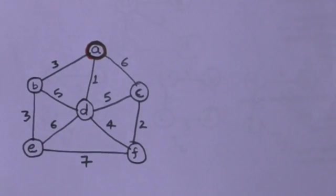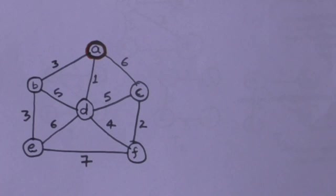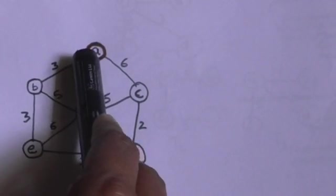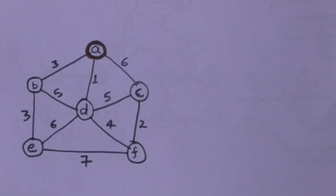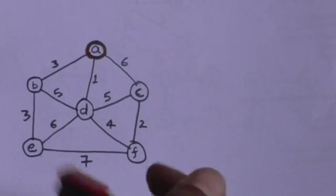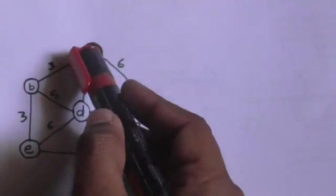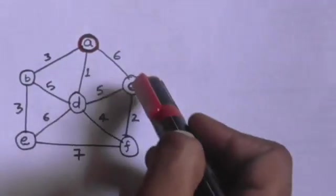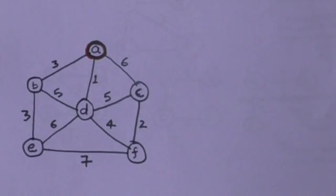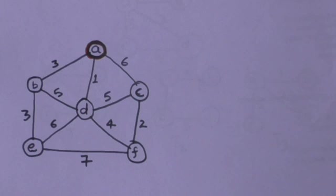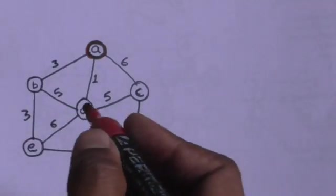Now this vertex A is included in the minimum spanning tree. See the edges which connect this vertex, which is included in the minimum spanning tree, to the vertices which are not included — these are AB, AD, and AC. Among these edges, edge AD has minimum weight, so this edge AD will be included in the minimum spanning tree.